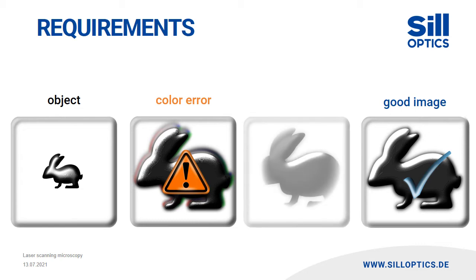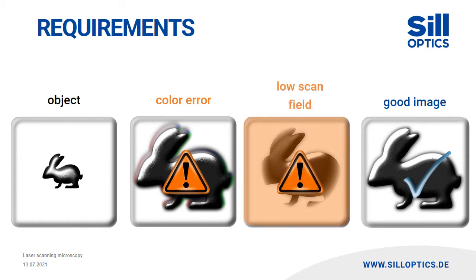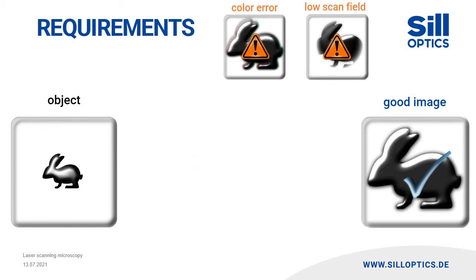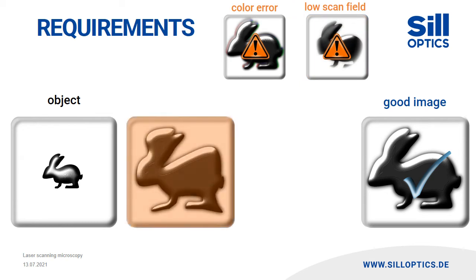An even scan field which is large enough for the sample is desirable in order to image large samples completely sharply. In very simple laser scanning microscopes, the scan lens is often replaced by a pair of lenses or a puzzle design, which allows only small areas to be imaged, often with high distortion.